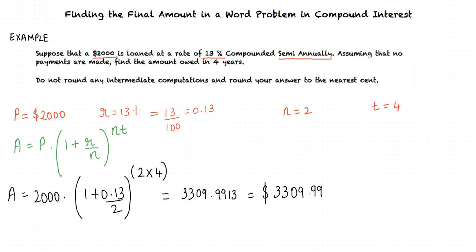Rounding off to the nearest cent, we get A equals $3309.99.